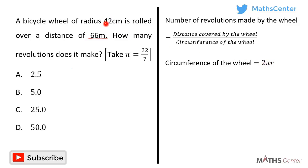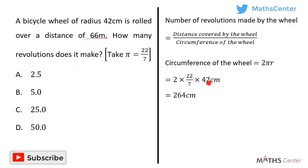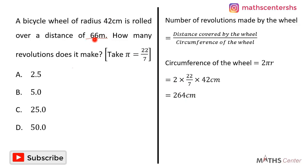The radius r is given to us as 42 centimeters, and pi has been given to us as 22 divided by 7. So the circumference is equal to 2 times 22 divided by 7 times 42 centimeters, and this gives us 264 centimeters.